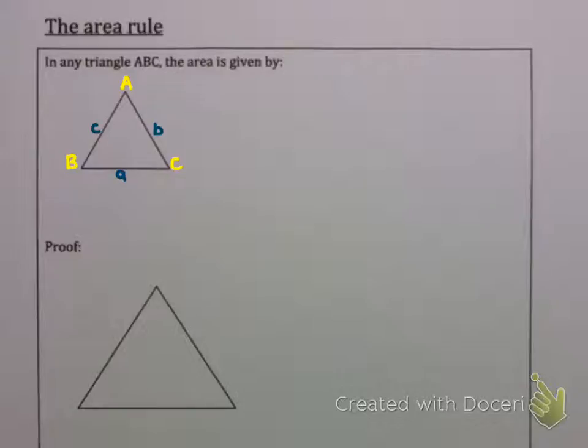So if I label the sides baby A, baby B and baby C, the area rule says that the area of any triangle is a half AB, so two sides multiplied together, multiplied by the sine of the angle between those two sides. So you'll notice it's A and B of the two sides I'm using. Then I must multiply by sine angle C.